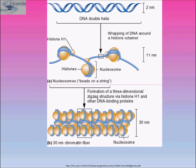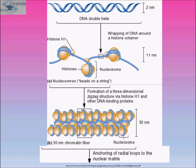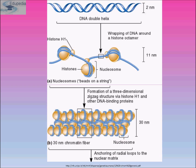The double helix DNA is about 2 nanometers in diameter. With increasing compaction, it forms an 11 nanometer nucleosome, where the linker DNA wraps around a histone octamer composed of 8 histone proteins, giving the appearance of beads on a string. Further compaction produces a three-dimensional zigzag structure via histone H1 and other DNA binding proteins, forming a 30 nanometer diameter solenoid structure. This then anchors as radial loops to the nuclear matrix.